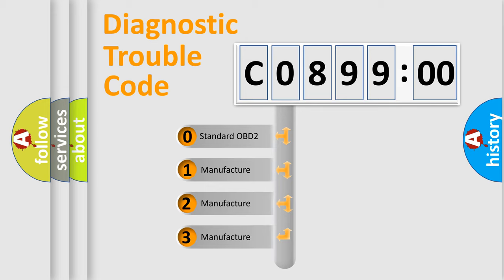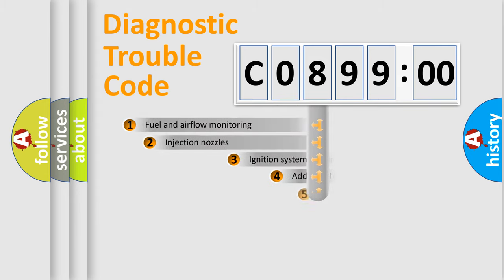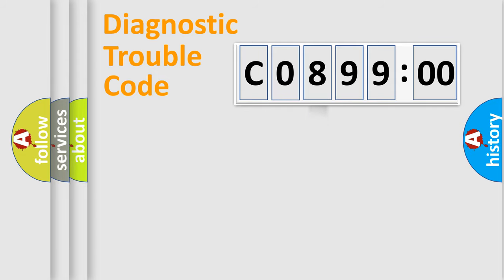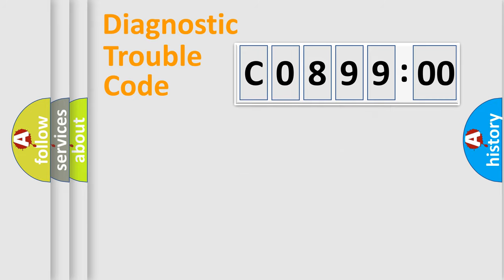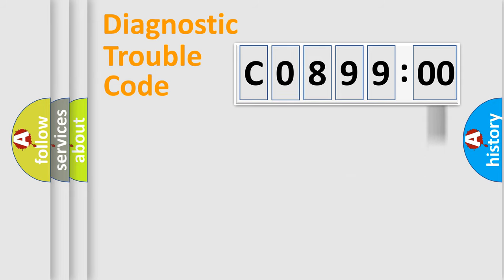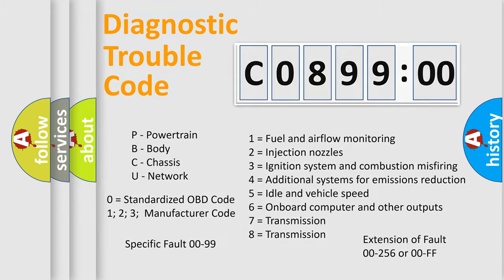If the second character is expressed as zero, it is a standardized error. In the case of numbers 1, 2, or 3, it is a more specific expression of a car-specific error. The third character specifies a subset of errors. This distribution is valid only for the standardized DTC code. Only the last two characters define the specific fault of the group. The add-on to the error code serves to specify the status in more detail — for example, a short to ground. Note that such a division is valid only if the second character code is expressed by the number zero.